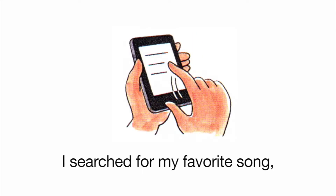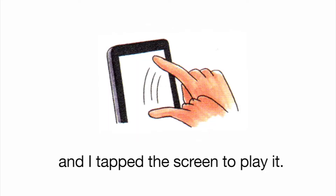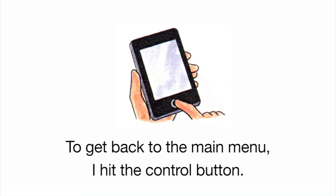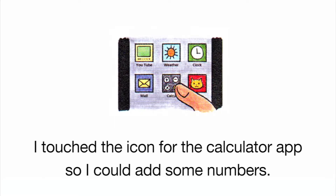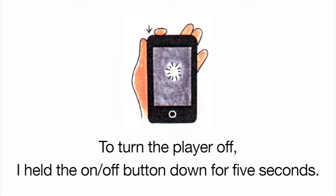I searched for my favorite song, and I tapped the screen to play it. To get back to the main menu, I hit the Control button. There were icons for many apps on the main screen. I touched the icon for the calculator app so I could add some numbers. To turn the player off, I held the On-Off button down for 5 seconds.